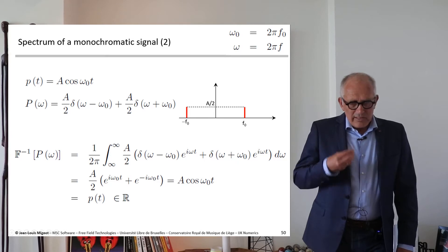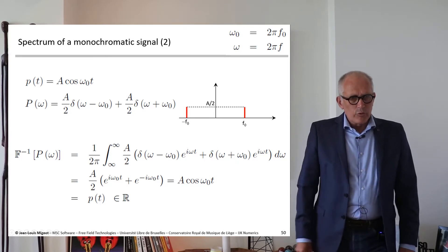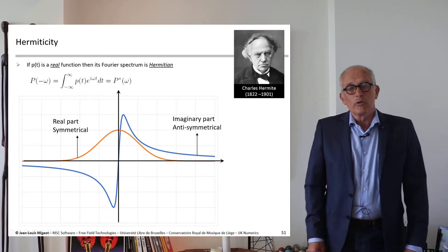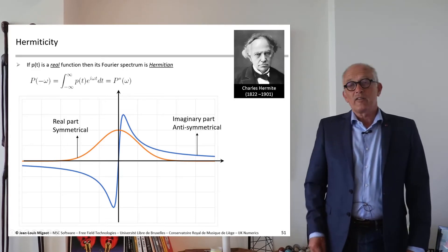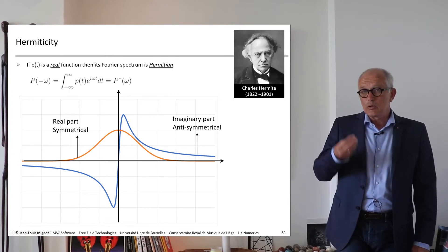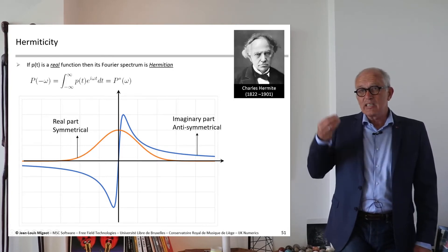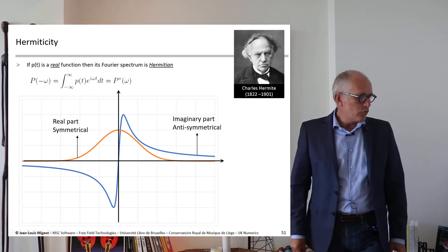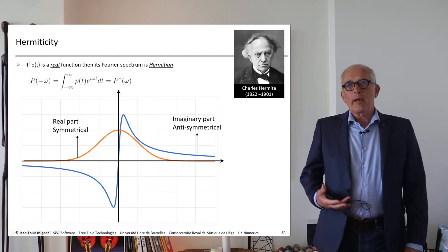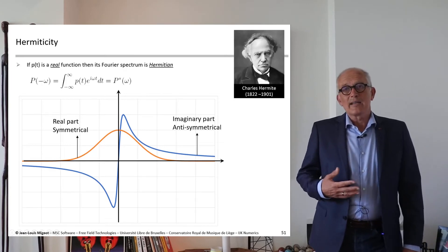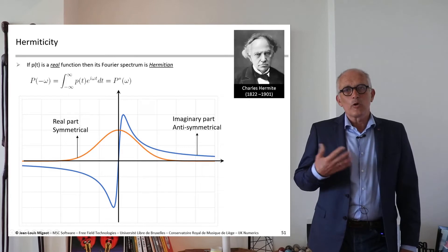So this which may seem counterintuitive actually comes from a very important property of the Fourier transform: the Fourier transform of a real signal, a function from R to R, has a property known as Hermiticity. It is Hermitian, the name comes from the French mathematician Charles Hermite.